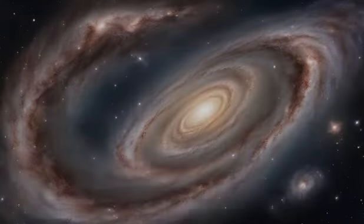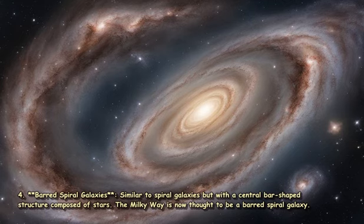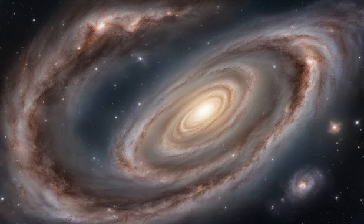4. Barred spiral galaxies: Similar to spiral galaxies but with a central bar-shaped structure composed of stars. The Milky Way is now thought to be a barred spiral galaxy.